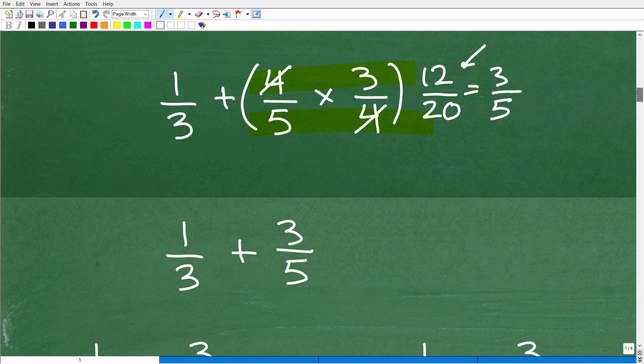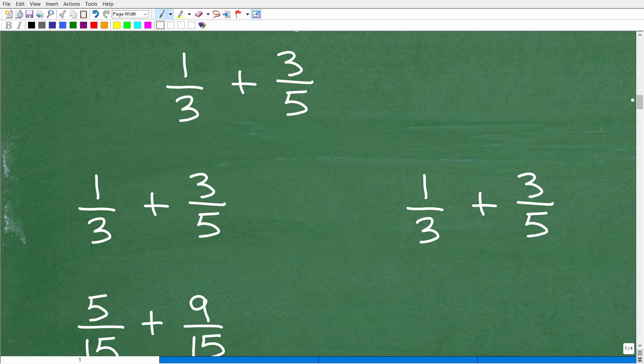Okay, so we're down to this part of the problem. We have 1/3. Let's just review. We have 1/3, and then we did this part, this multiplication, and we have 3/5. And now we have to figure out what 1/3 + 3/5 is. So I'm going to show you two ways.